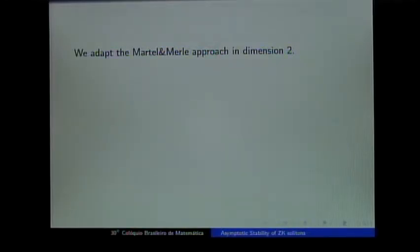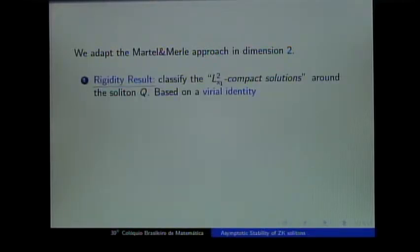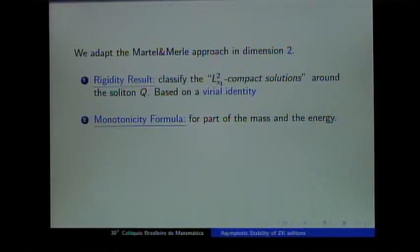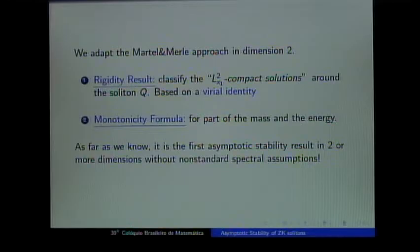We adapt the Martel-Merle approach to dimension 2. There are two main ingredients in the proof: first, a rigidity result classifying all L²-compact solutions near the soliton (based on a virial identity); and second, monotonicity formulas for parts of the L² norm and energy. To our knowledge, this is the first asymptotic stability result for a nonlinear dispersive model in dimension 2 without non-standard spectral assumptions on the linearized operator.